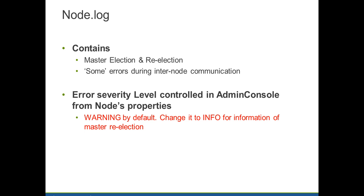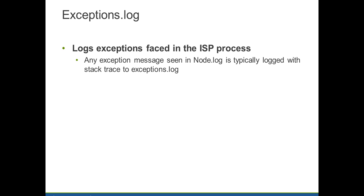The node.log contains master election and re-election information, and also some errors during inter-node communication. The default level of logging in node.log is warning. You can change it to info for information on master re-election. Exceptions.log contains more detailed stack traces on the messages seen in node.log.